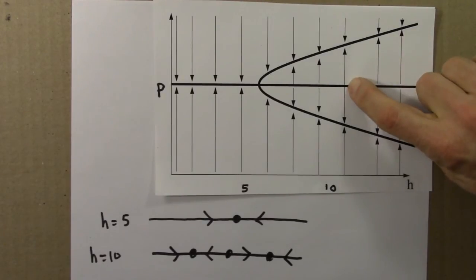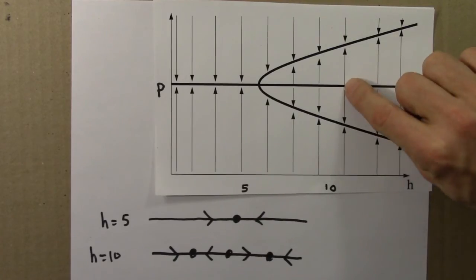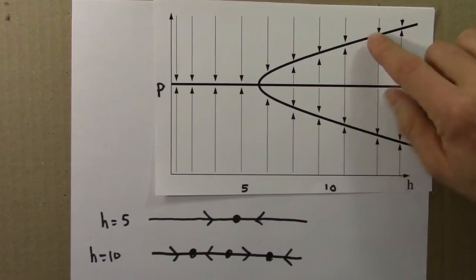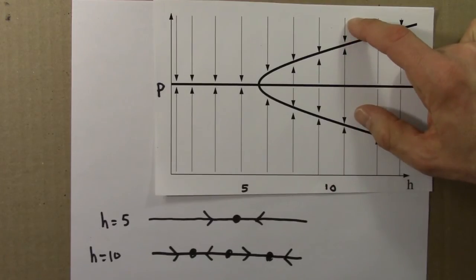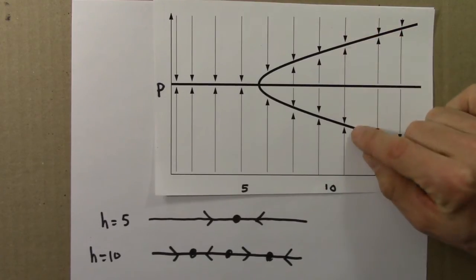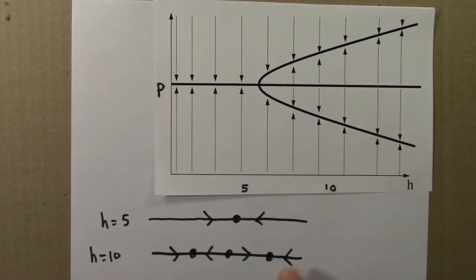The middle fixed point here is unstable. Arrows push away from it. If you're at this fixed point and move to either side, you don't return to this fixed point—you head to another fixed point. These two fixed points are stable. Arrows are pointing towards them. If you move a little bit away, you get pushed back.